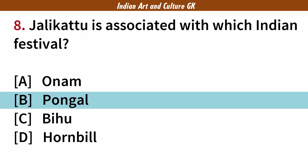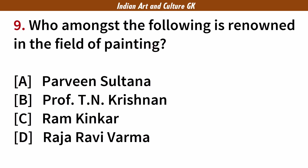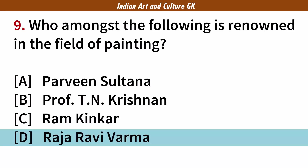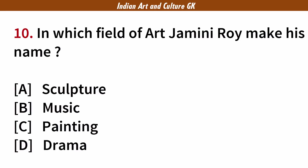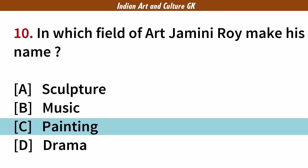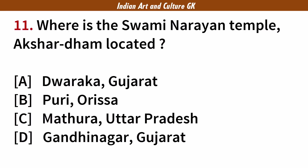Who among the following is renowned in the field of painting? Answer: D. Raja Ravi Verma. In which field of art did Jamini Roy make his name? Answer: C. Painting. Where is Swami Narayan Temple, Akshardham, located? Answer: D. Gandhinagar, Gujarat.